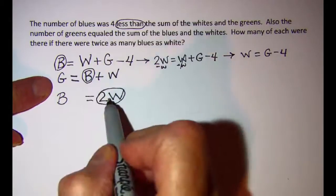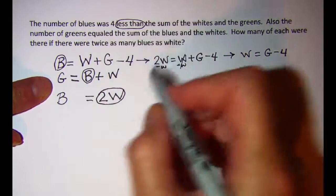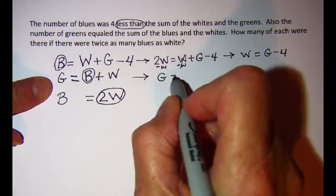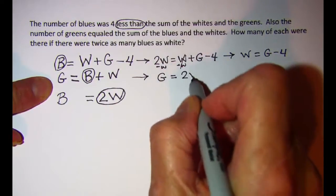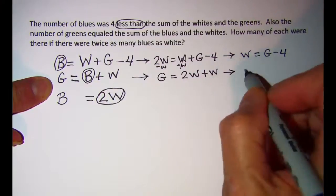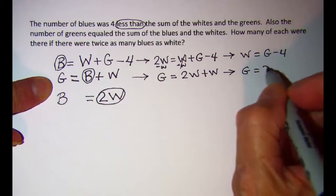And then let's go ahead and put 2W in here. This one becomes G equals 2W plus W. And so that gives me G is equal to 3W.